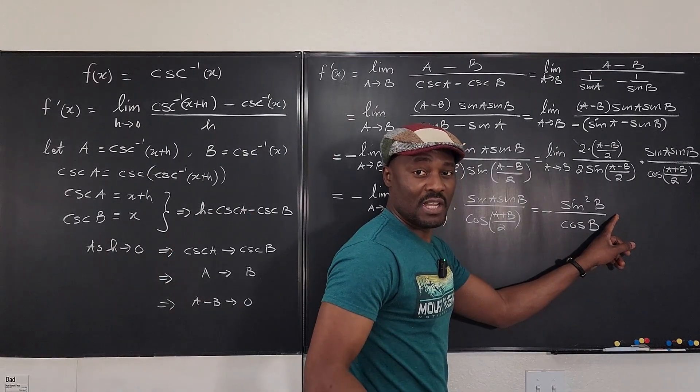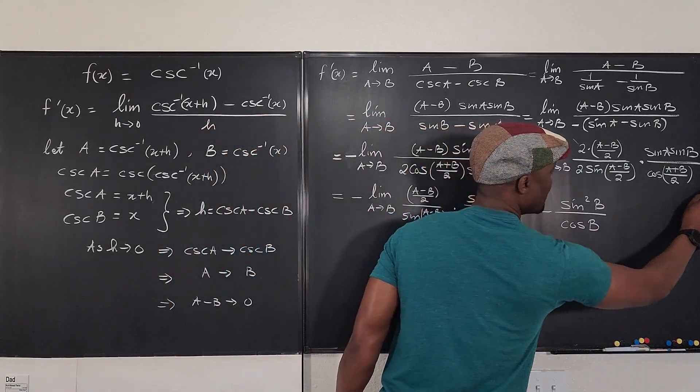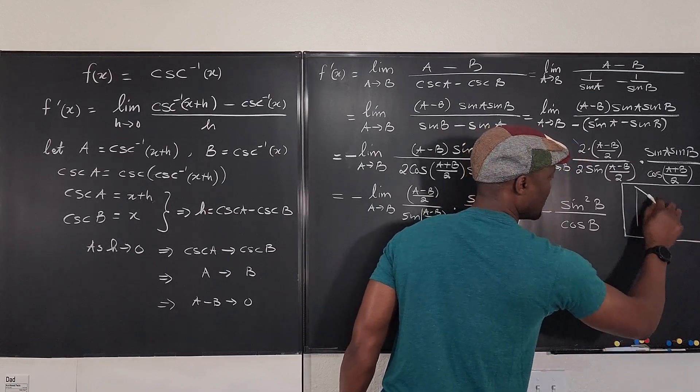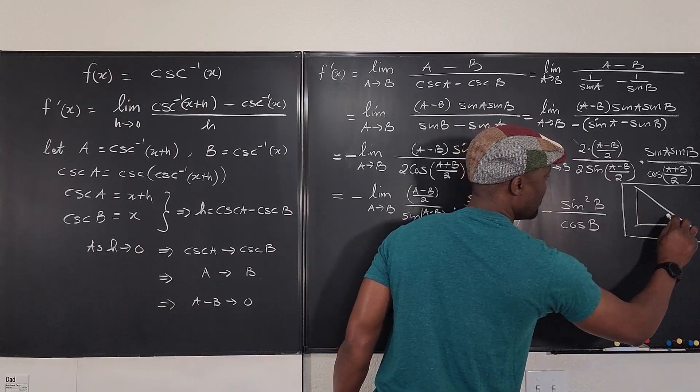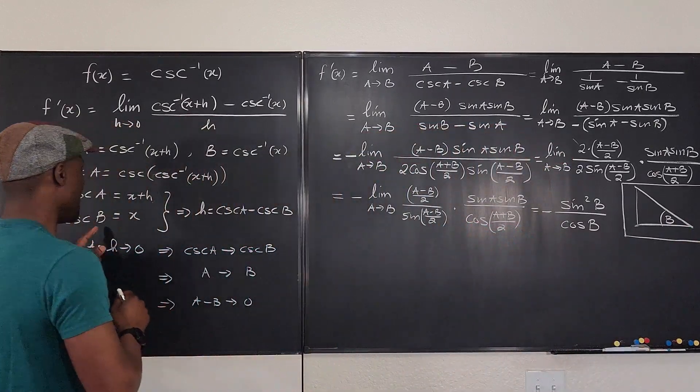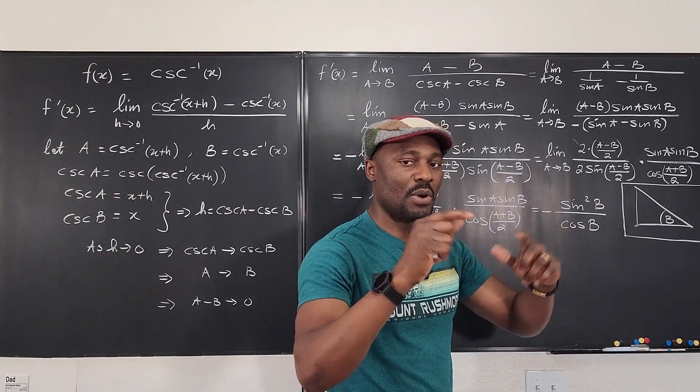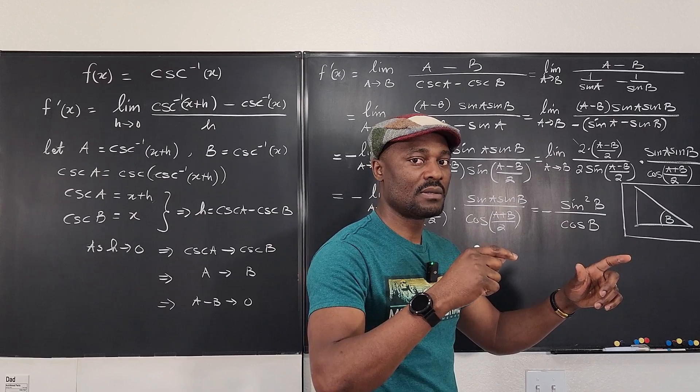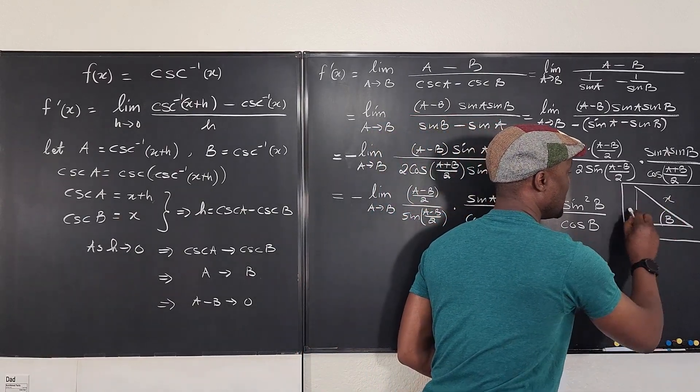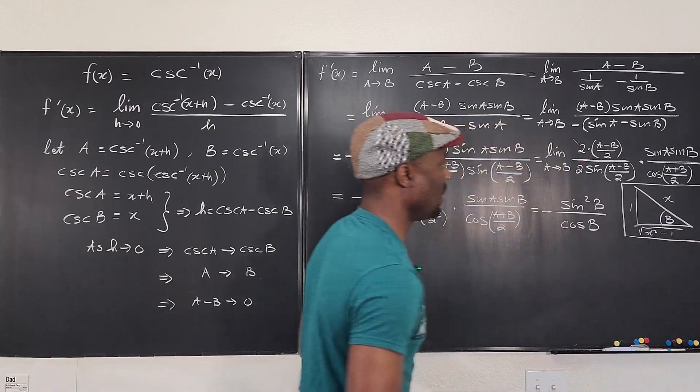So if we construct a triangle, let's put the triangle here. Let's make a small triangle here. This is our triangle. And this is the angle b. But from the beginning, we know that cosecant b is equal to x. Cosecant is hypotenuse over opposite. So it's x over 1. So this is going to be x, this is 1. And this is the square root of x squared minus 1.